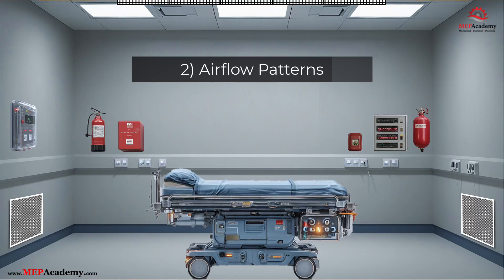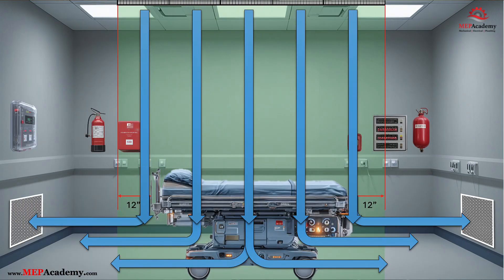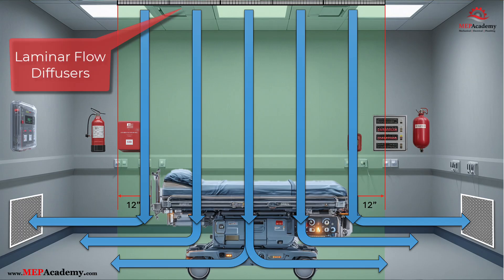Takeaway 2: Airflow patterns and HVAC layout protect the sterile field. The configuration and movement of air in an OR is not random — it's engineered to flush contaminants away from the patient and surgical team. Per ASHRAE 170-2021 and FGI guidelines, supply air must be delivered using a unidirectional laminar flow system located directly above the surgical table. Supply air enters the room through laminar unidirectional ceiling diffusers, located directly above the surgical table in the sterile zone, and is filtered through HEPA filters.